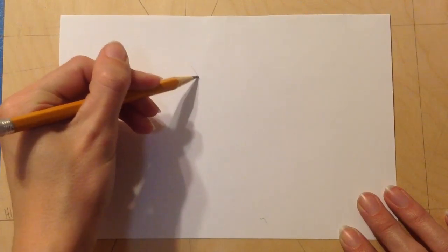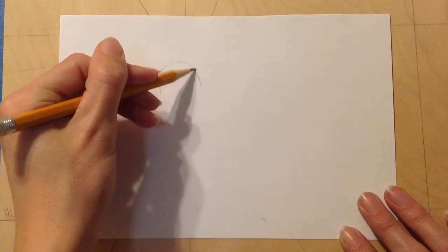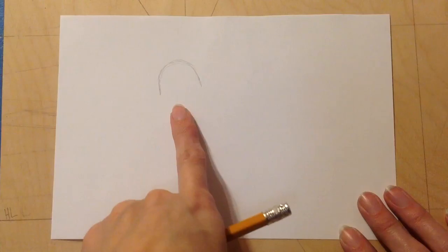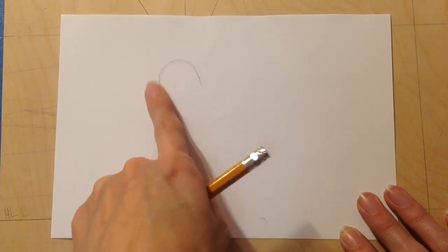And a pear is thinner at the top and bigger at the bottom. I'm going to start kind of in the middle of my paper, a little bit off to the left, and lightly draw a curved line.